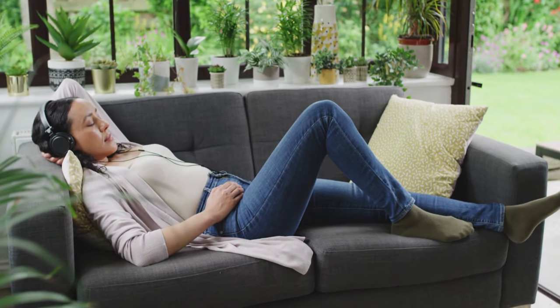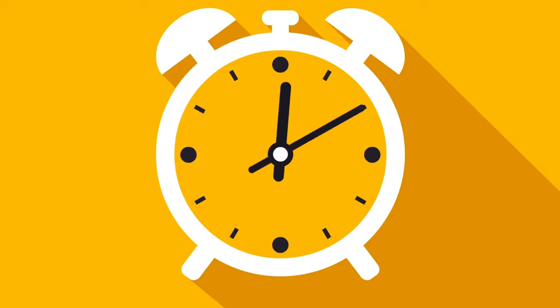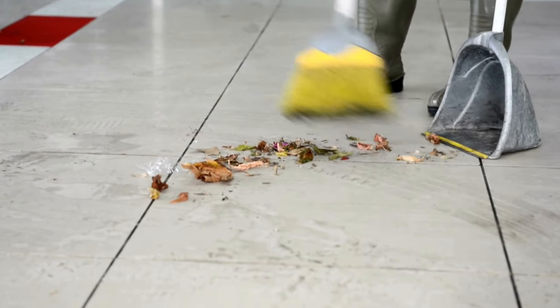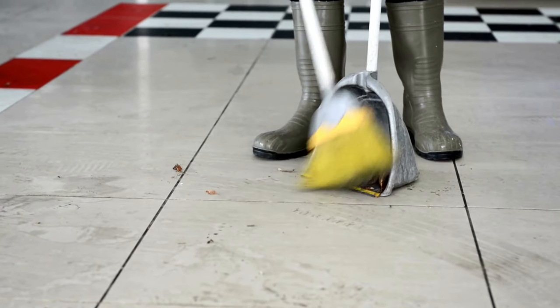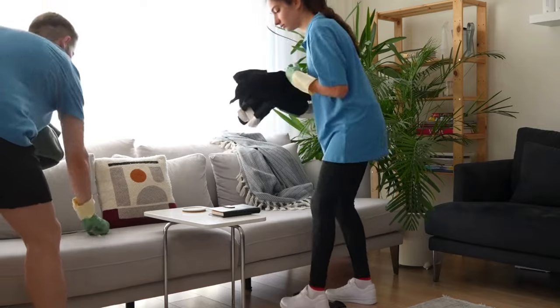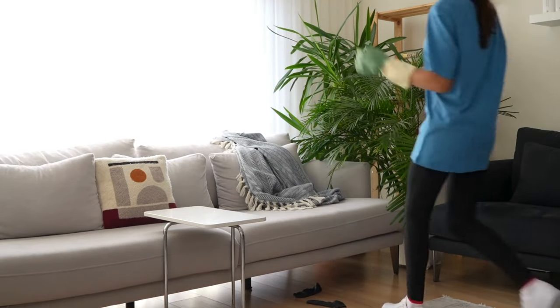When the timer goes off, take a quick break if you need it. Then set the timer again and move on to the next task. This could be wiping down surfaces, loading the dishwasher, or sweeping the floor. Breaking it down into 15-minute chunks makes it less overwhelming and more manageable.